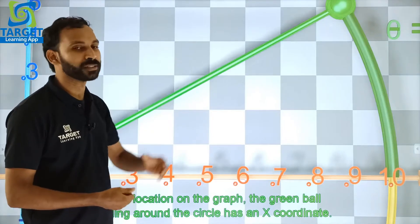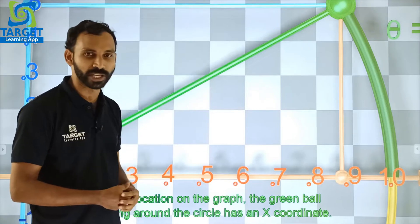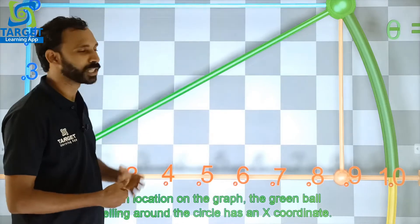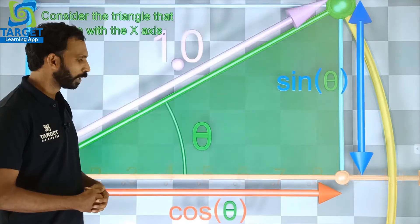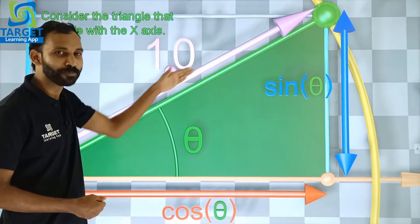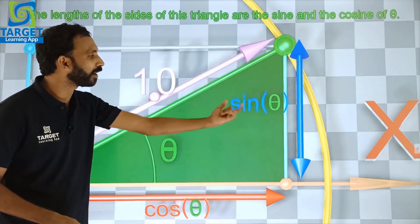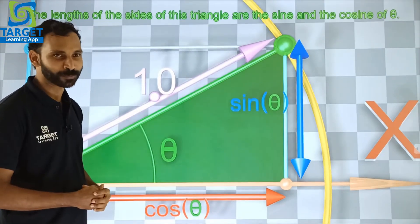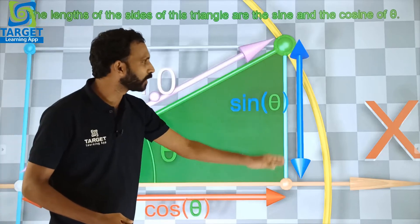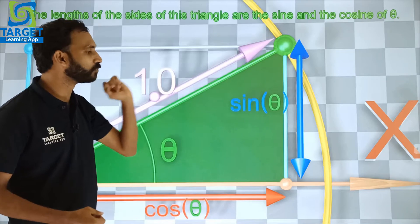For any point on this circle, the green ball has its own x-coordinate and a corresponding y-coordinate. Look at this right triangle. Since the angle is theta and the hypotenuse is 1 unit, the sides of this right triangle will be cos theta and sin theta. That is the corresponding x-coordinate of our green ball will be cos theta and y-coordinate will be sin theta.